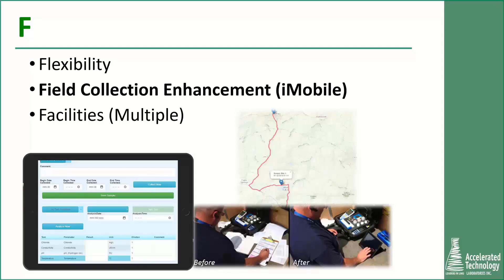Another F is field sampling and data entry. Being able to download samples to a tablet, get route information, use the tablet to locate samples, log date and time, collection information, and other field data streamlines the field collection process and eliminates issues with multiple pieces of paper — and of course that really nasty problem of poor handwriting. When I was in a lab, anyone who had to decipher my chain of custody notes would have loved an electronic system that captured the information and automatically transferred it to the LIMS.